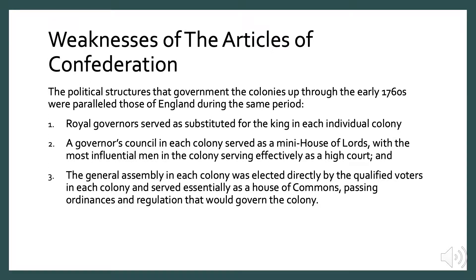From the 17th century through the 1760s, the political structures that governed the colonies were parallel to those of England during the same period. Royal governors served as substitutes for the king in each individual colony. The governor's council served as a House of Lords, while the general assembly in each colony was elected by qualified voters and served essentially as a House of Commons, passing ordinances and regulations that would govern the colony.